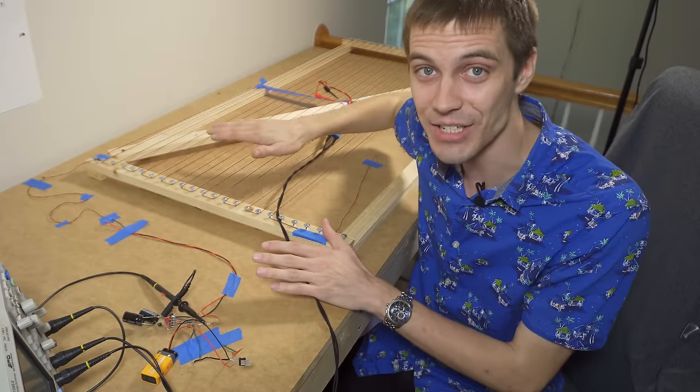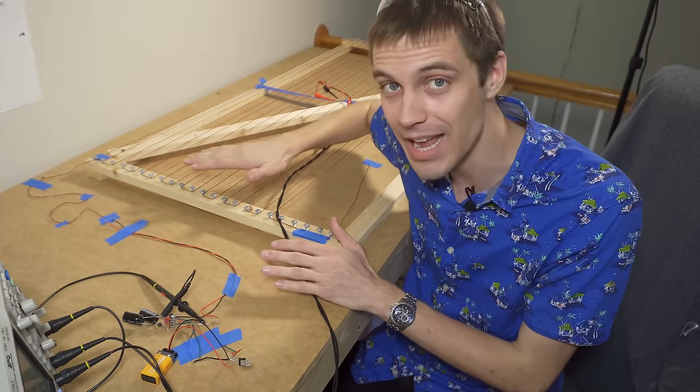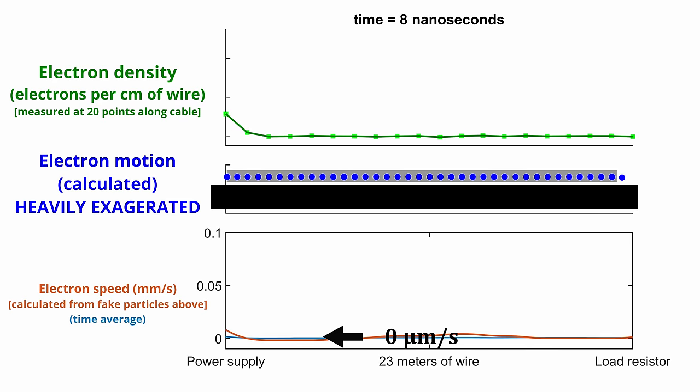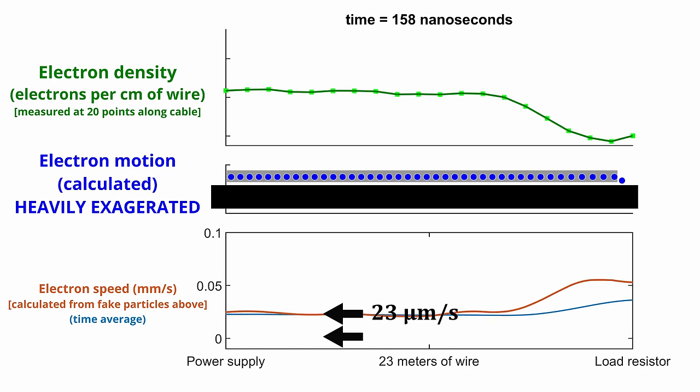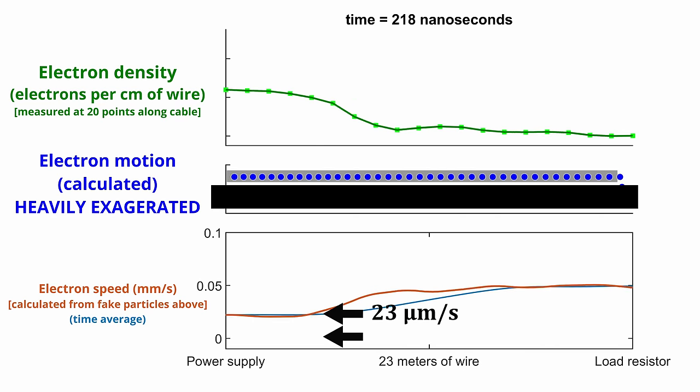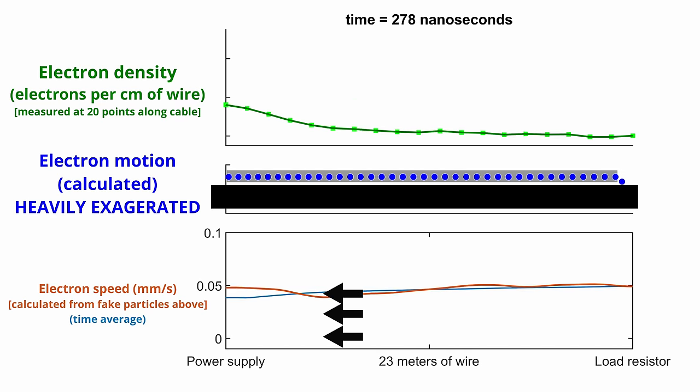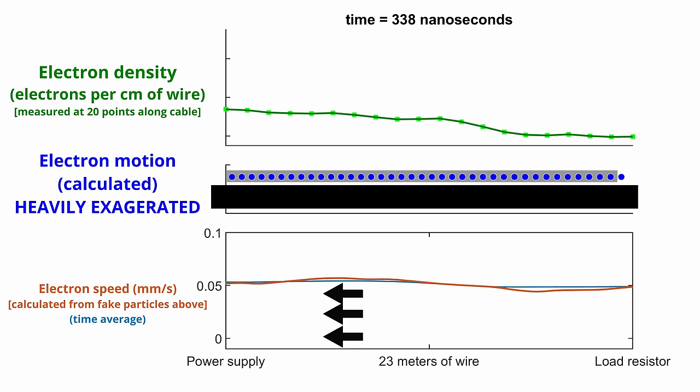At that point, after the transient is gone, the circuit will be obeying Ohm's law. Now let's look at the speed graph at the bottom because I think that makes this much clearer. As the wave goes by, we see all the electrons in the wire get accelerated to about the same speed. And then when the wave travels in the other direction, they all get a bit faster.